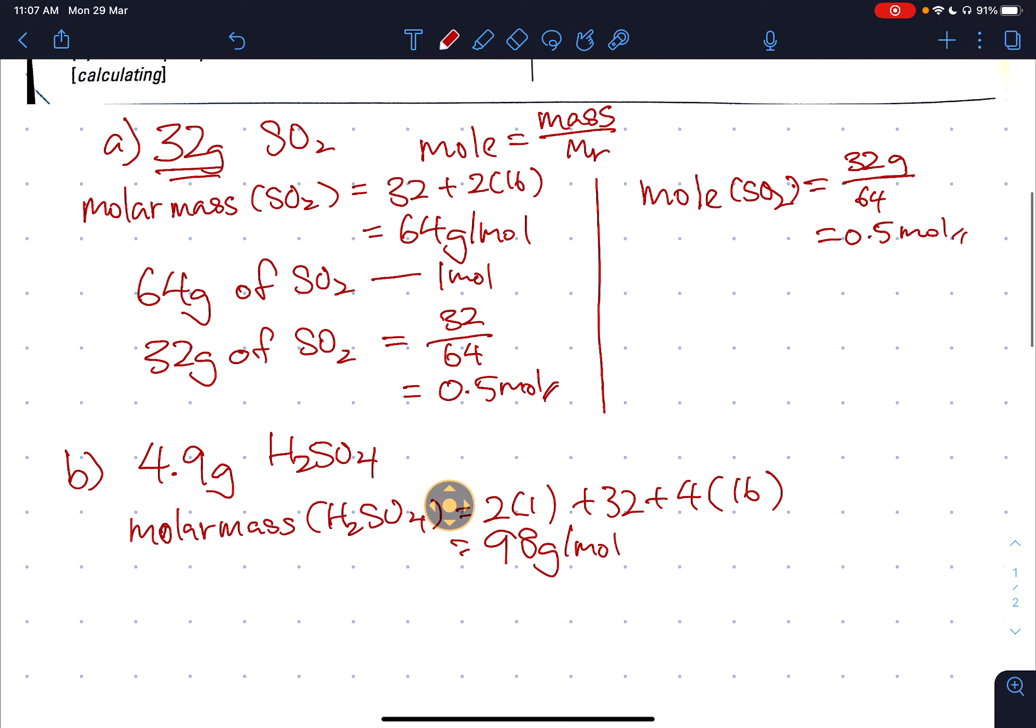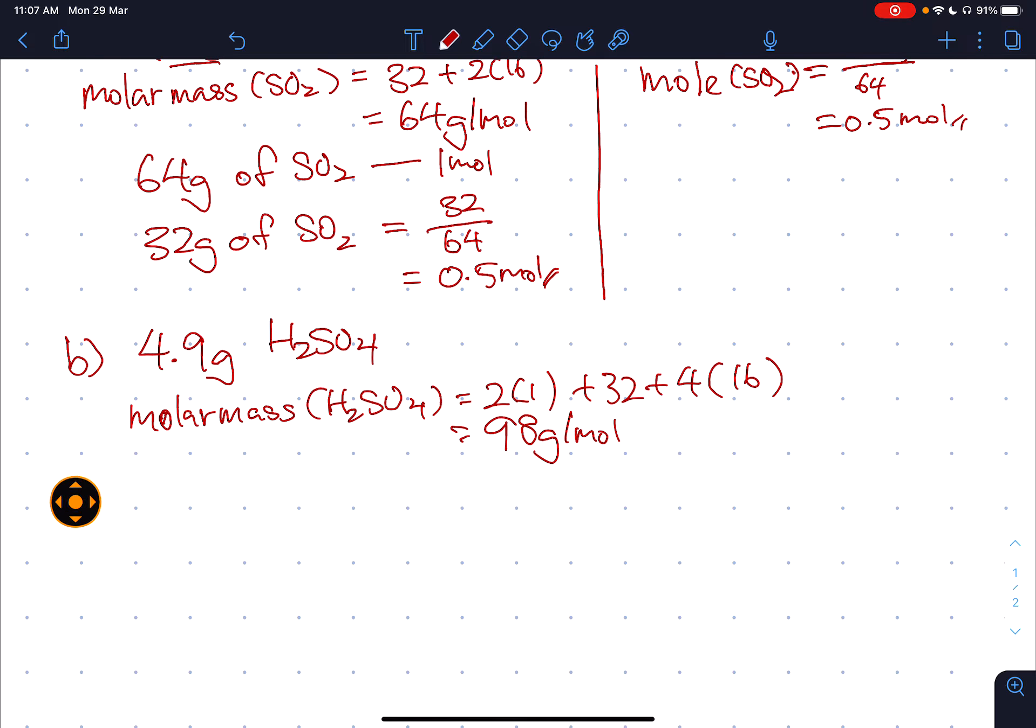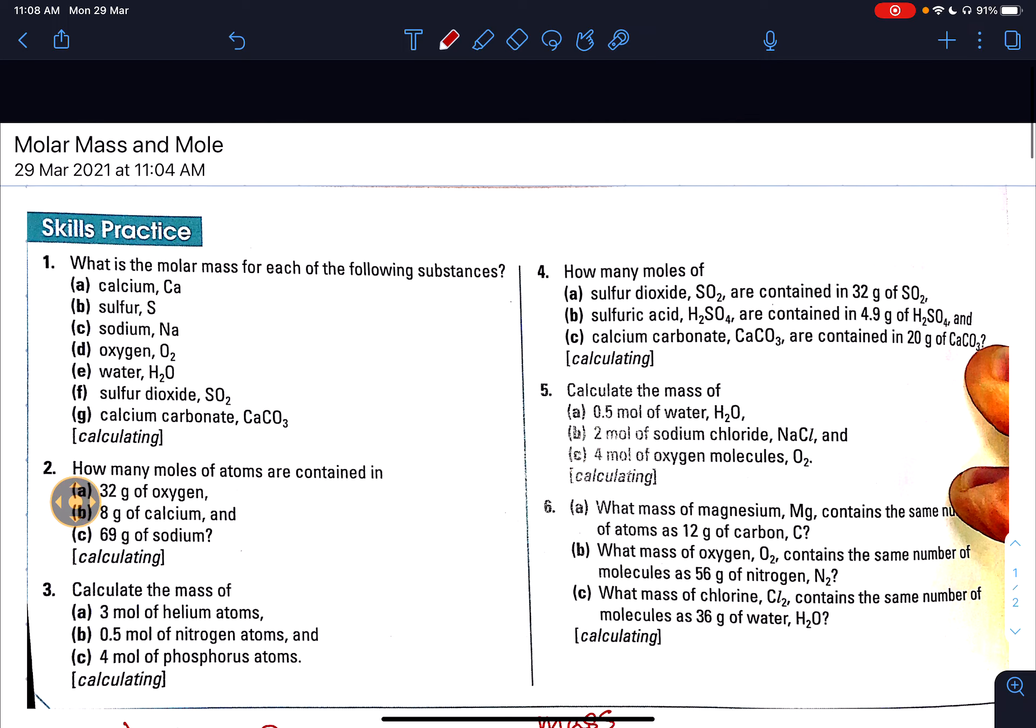So what does this mean? This means that if I have 98 grams of H2SO4, that is equivalent to 1 mole of H2SO4. So now I need to find 4.9 grams of H2SO4, so that will equal to 4.9 divided by 98, so 4.9 divided by 98, that is 0.05 moles.